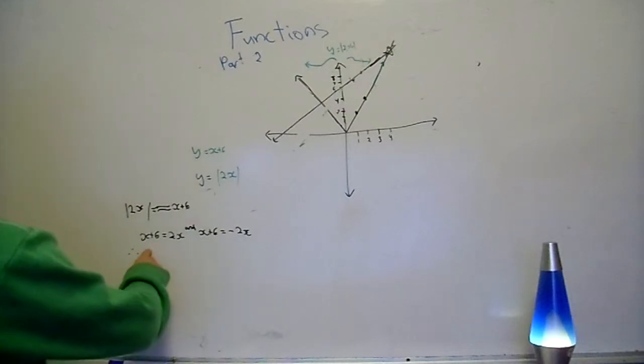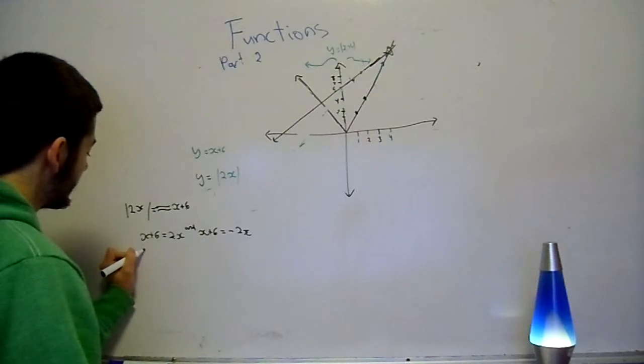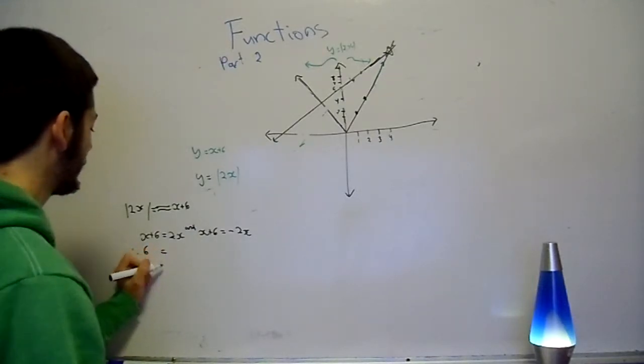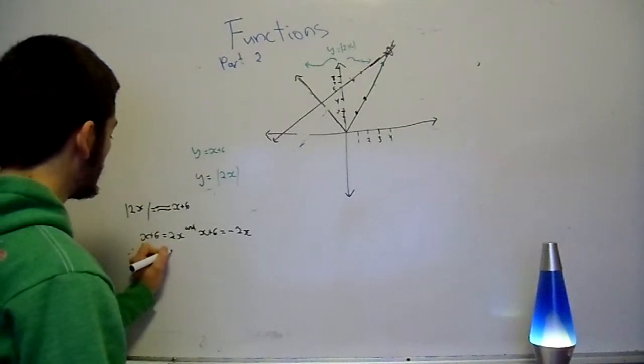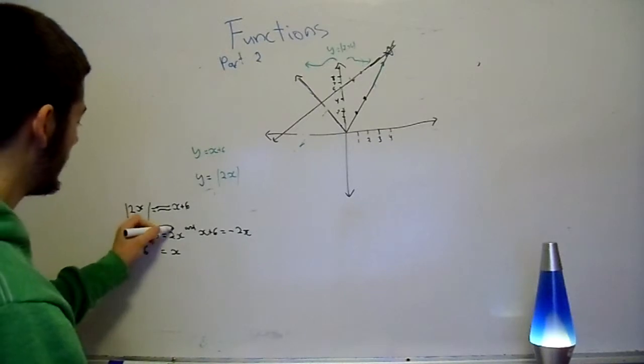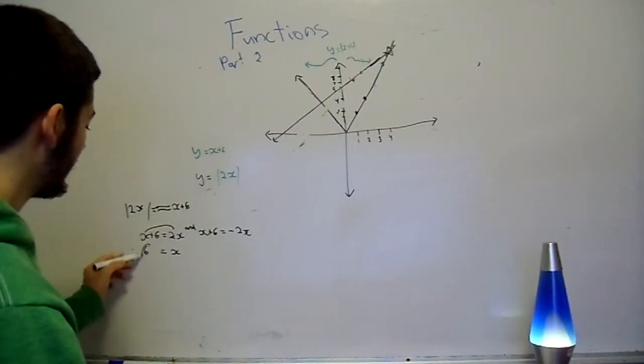Alright, so x plus 6 equals 2x. Therefore, 6 is equal to x. Alright? That's pretty simple. Move the x over. When you move it over, you minus it. So that way you've just got 6 left over on this side. That way 6 equals x.